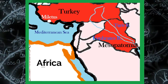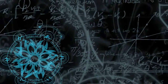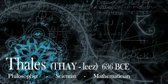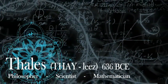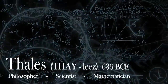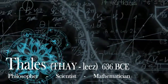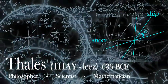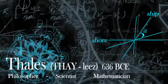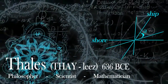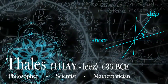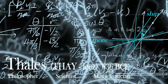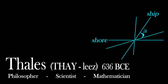This is the birthplace of the first philosopher, scientist, and mathematician, and his name was Thales. He was born over 2,600 years ago in 636 BCE. He was able to come up with a formula to figure out how far away ships were from shore. He used triangles and geometry to figure this out. In fact, he founded the building blocks of geometry.